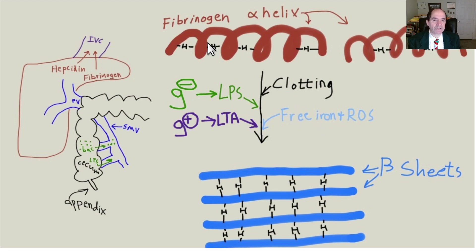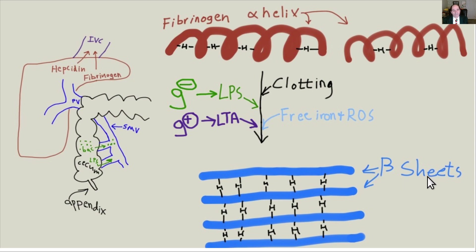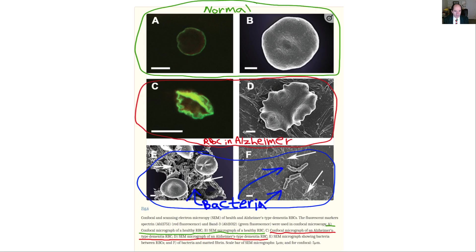One major prothrombotic effect of free iron is distortion of the structure of fibrinogen, a precursor blood clotting protein. Normally fibrinogen has intramolecular hydrogen bonds connecting different parts of itself. Iron distorts it so hydrogen bonds form between adjacent molecules, stacking up into beta pleated sheet secondary configurations. You get oligomers of fibrinogen molecules that can polymerize further, creating an abnormal appearance — dense matted deposits in blood clots that are more difficult to lyse, more dangerous, and more at risk of occluding an important artery.